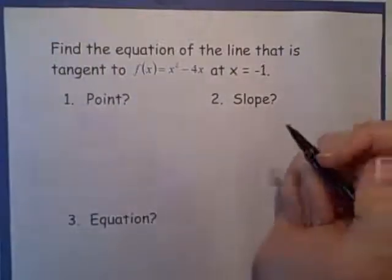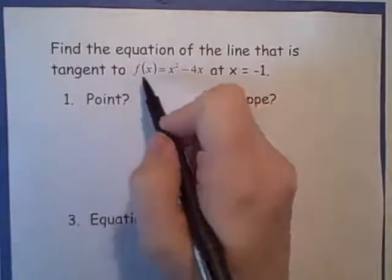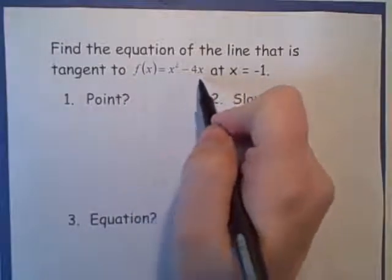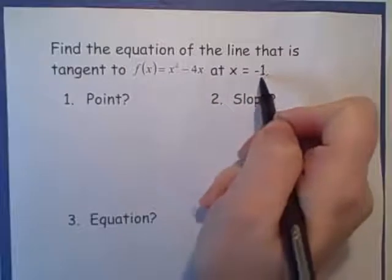In this video, we're going to find the equation of the line that's tangent to f of x equals x squared minus 4x at x equals negative 1.